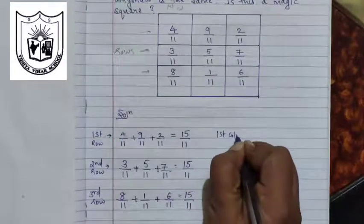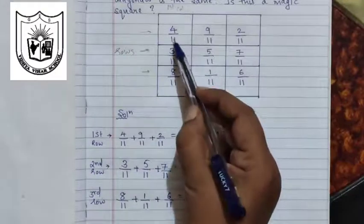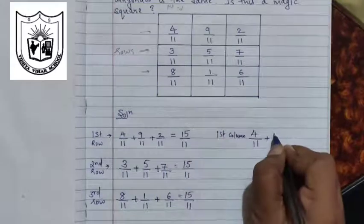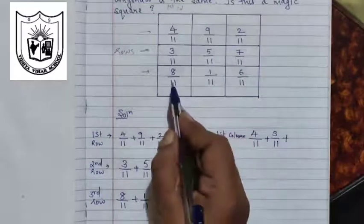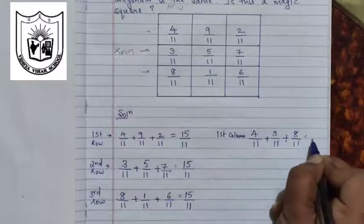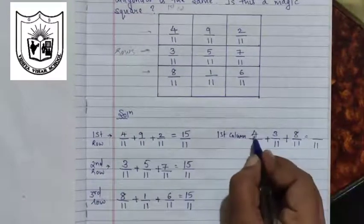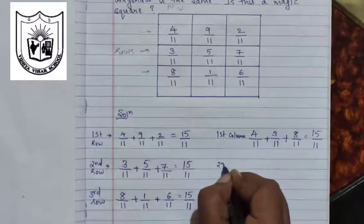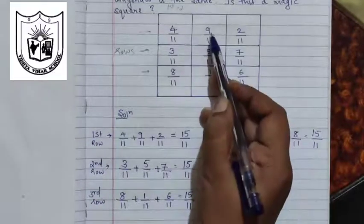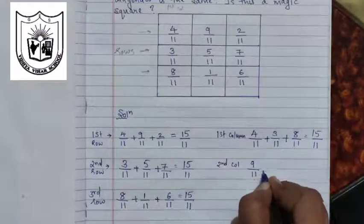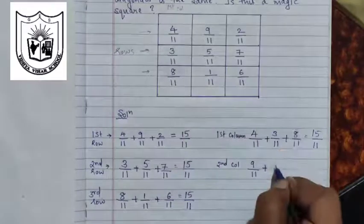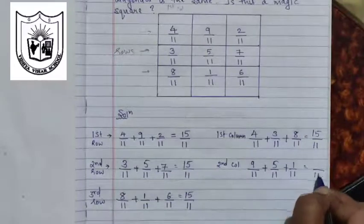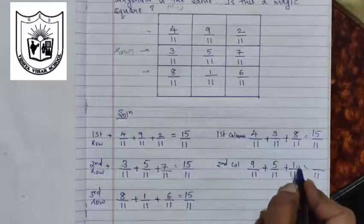First column: we have 4 upon 11 plus 3 upon 11 plus 8 upon 11. The denominator is common, so we write it once. 4 plus 3 is 7, plus 8 is 15. Now for the second column: 9 upon 11 plus 5 upon 11 plus 1 upon 11, giving us 15 upon 11.